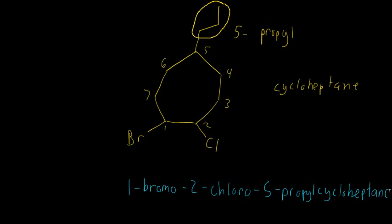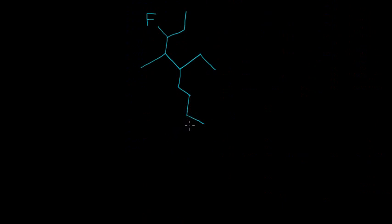That would be how you name this compound, and we're going to get straight into another example. We have this compound here — no rings, so it's not going to be a cyclostructure. The first thing we're going to do is number the longest carbon chain. We could start over here and count five carbons, or we could go another way and count seven, or up here it could be one, two, three, four, five, six, seven, eight, nine. I always like to count them all just so I don't make the mistake of missing a chain that's longer than the others.